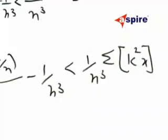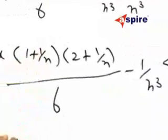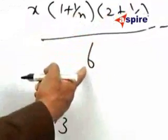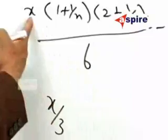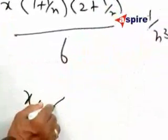Now, taking the limit as n→∞, this will be x/3 because 2 will get cancelled with the 2 here. x will be there, x/3. This will be 0, so this is less than